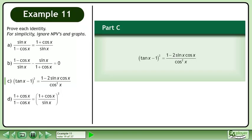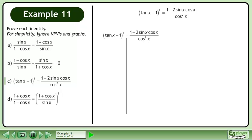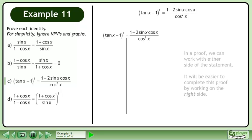In Part C, prove that (tanx minus 1) squared equals 1 minus 2sinx cosx over cos²x. Rewrite the statement and draw a line. In a proof, we can work with either side of the statement. It will be easier to complete the proof by working on the right side.